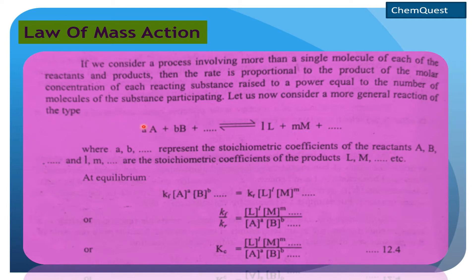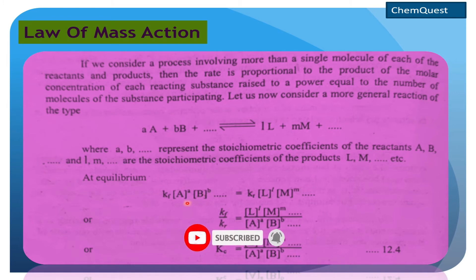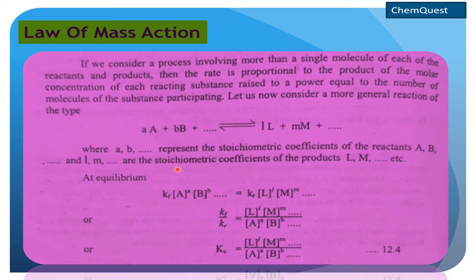تو rate of reaction کی form میں لکھیں تو: rate of forward reaction kf is proportional to the product of concentration of A and B raised to the power equal to their coefficients — which are small a and small b. یہ جو powers ہیں یہ represent کرتی ہیں actual number of molecules which are taking part in the reaction.